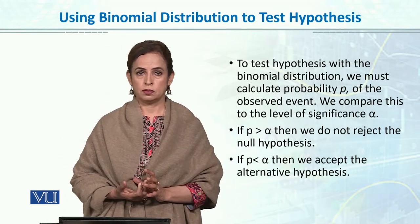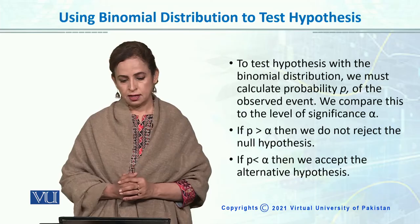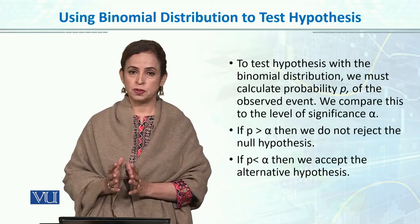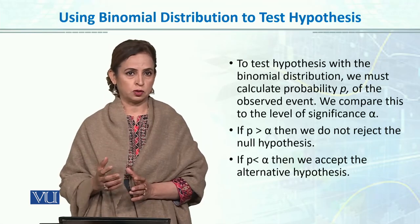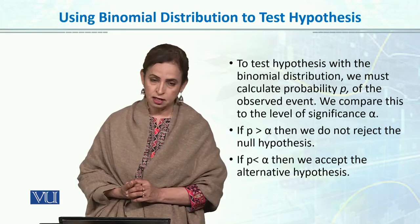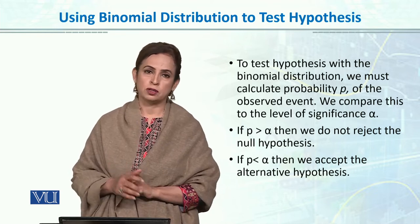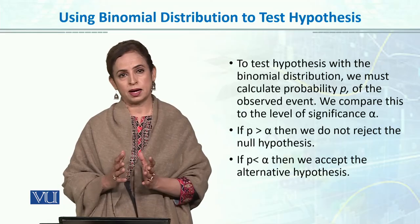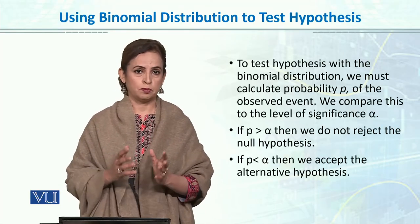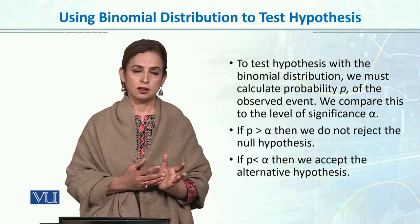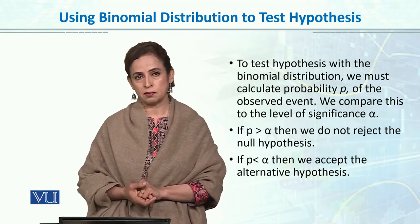Binomial distribution can be used to solve probability questions by approximating the normal distribution. Similarly, we can test hypotheses using binomial distribution. In inferential statistics, we have two goals: estimating population parameters and testing hypotheses. Hypothesis testing means you form a hypothesis about a population, collect a sample, apply descriptives on that sample, and then draw inferences about the population.